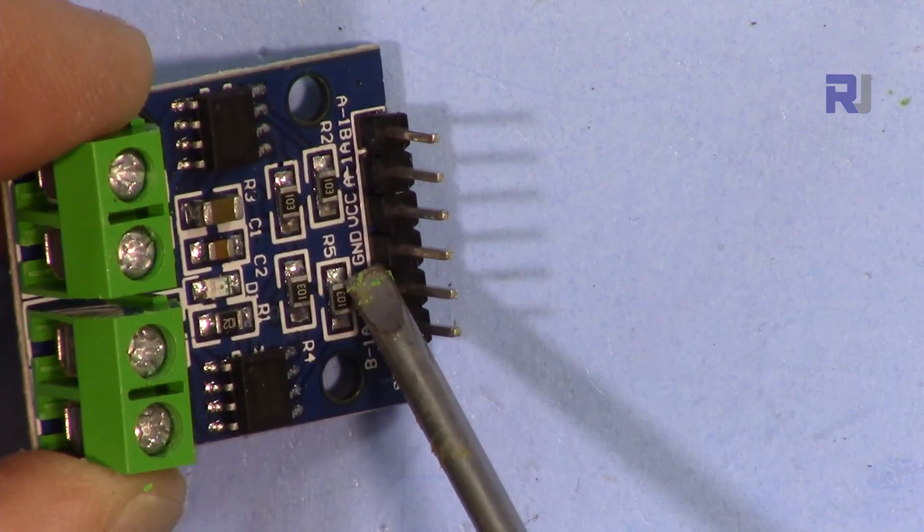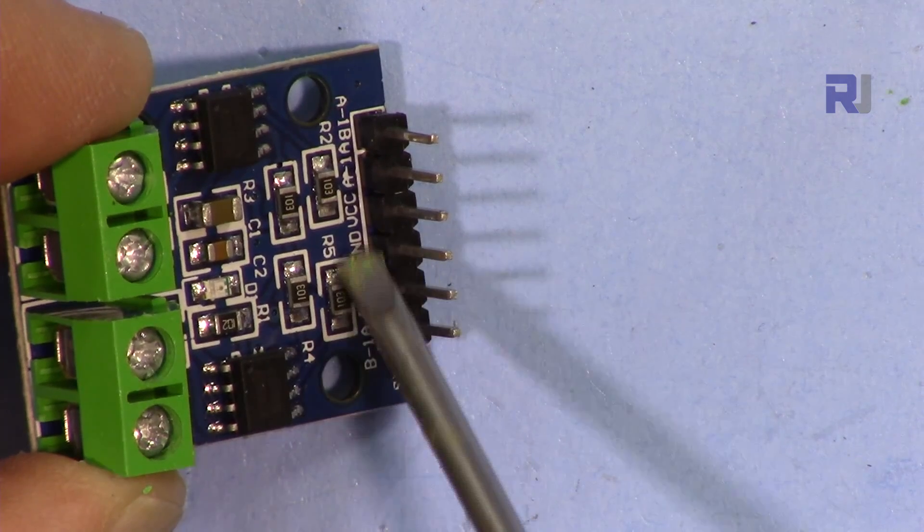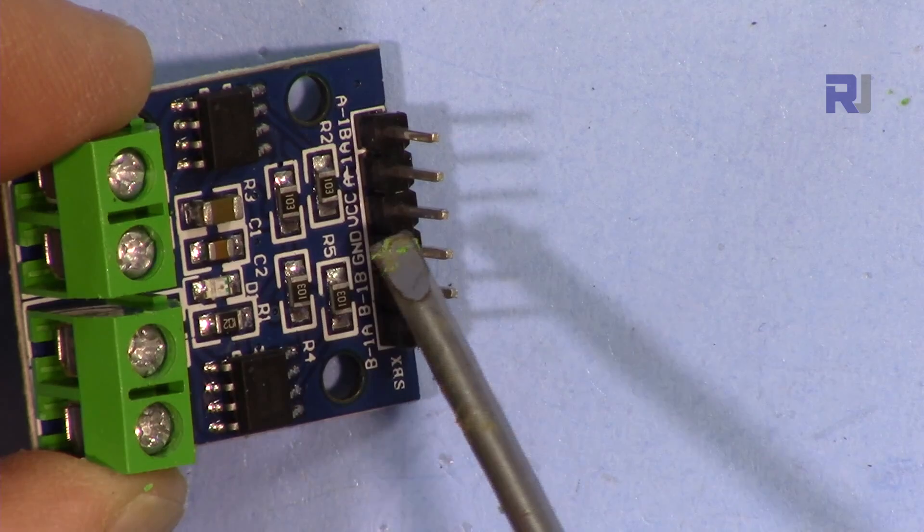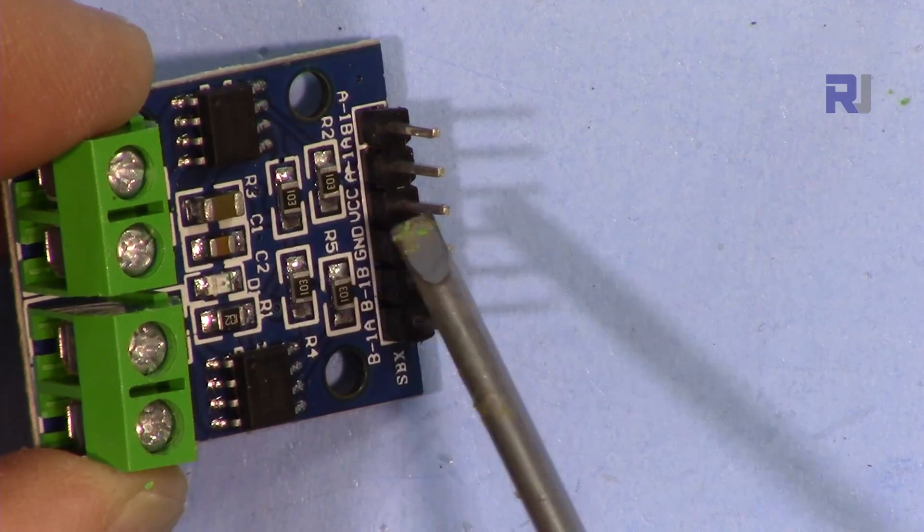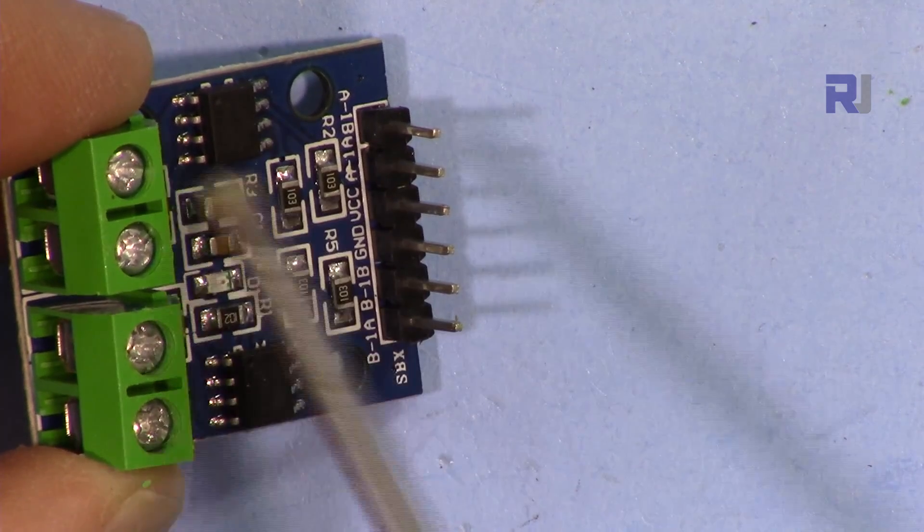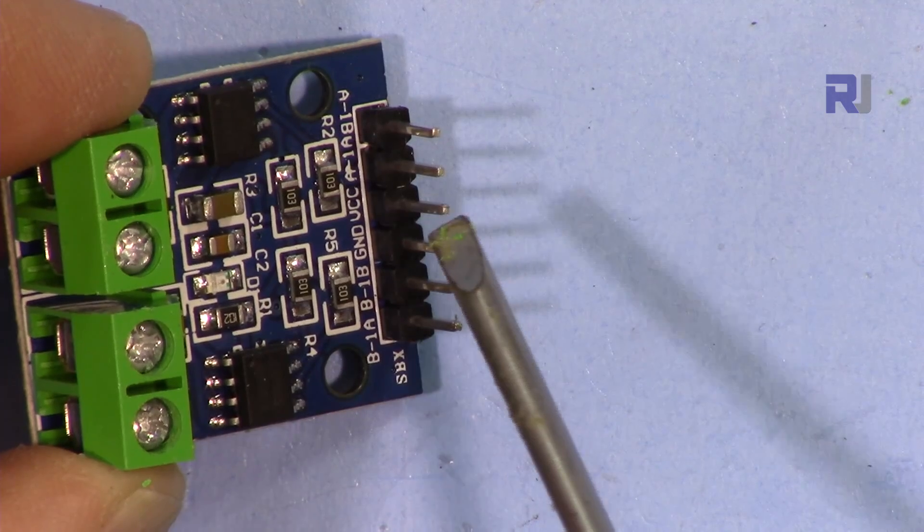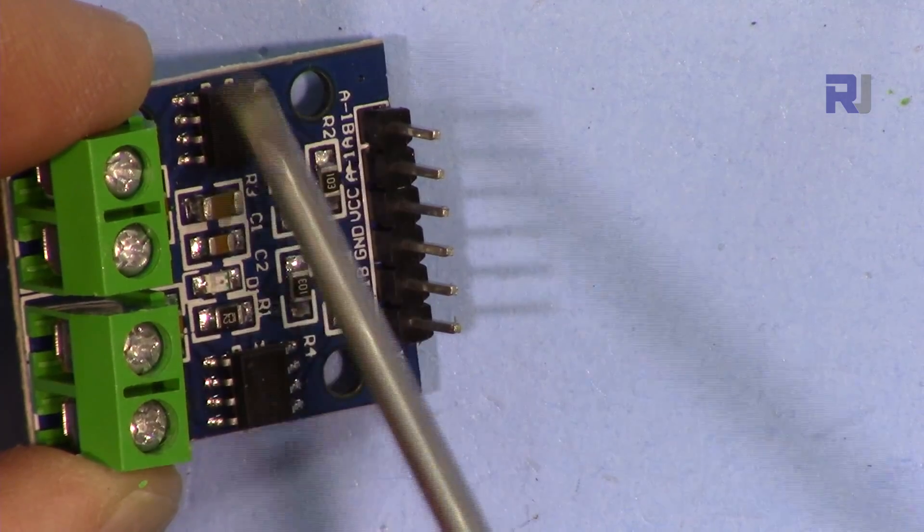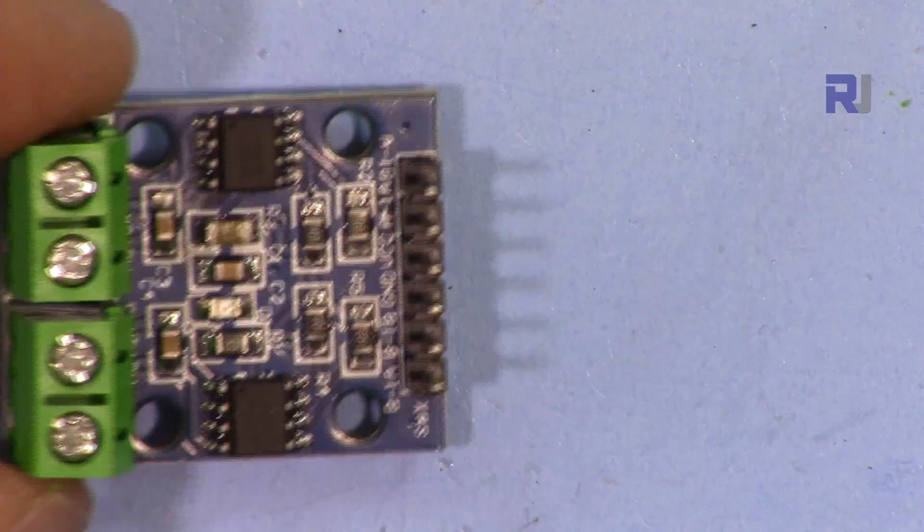In the middle we have ground which will be connected to the ground, and VCC which can be connected to a voltage of 2.6 to 12 volts because this chip can handle it. So you connect it to a voltage according to what your motors need so the system can control the motor.